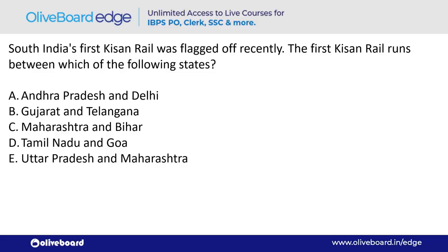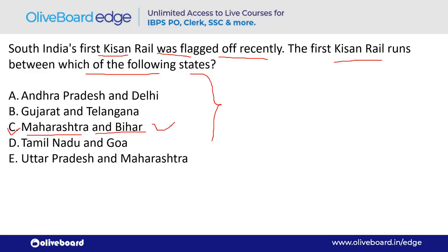South India's first Kisan Rail was flagged off recently. The first Kisan Rail runs between which two states? It runs between Maharashtra and Bihar — option C.